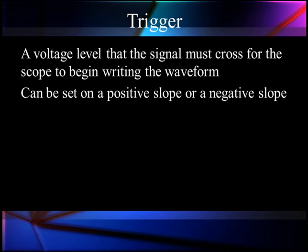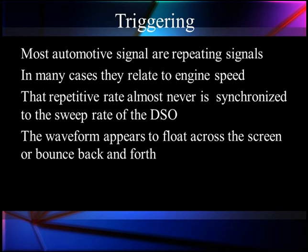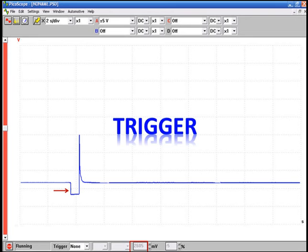Let's talk about the trigger voltage. This is the voltage level that the signal must cross for the scope to begin riding the waveform. It locks in at that point. We can have a positive slope where it's going from low to high, or we can have a negative slope where it's going from high to low. Most automotive signals are repeating signals. That means they happen over and over, and they usually relate to engine speed. Now that repetitive rate almost never is synchronized to the exact speed of the trace. It looks like it's floating around. It appears to be floating across the screen and going back and forth. When we set a trigger, we lock it in and start this quick pulse, look at it quickly, and have a lot of empty time. If we didn't lock this trigger in, we would not be able to do this. It would be drifting across the screen.